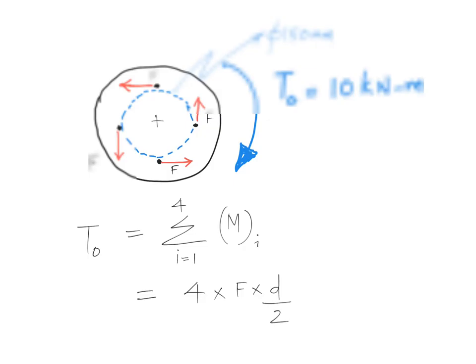We are saying since the flange is in equilibrium, if you take the sum of the moments about O you should get zero. That means T₀ is balanced by these four forces.